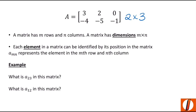Every entry in our matrix is known as an element — so 3, 2, negative 4, negative 1 are all elements of our matrix. We use the notation A sub mn to identify the specific location of an entry: the mth row and nth column. For example, A sub 2,3 means the second row, third column, which is negative 1. A sub 1,2 means first row, second column, which is 2. That's how we label and identify elements of our matrix.